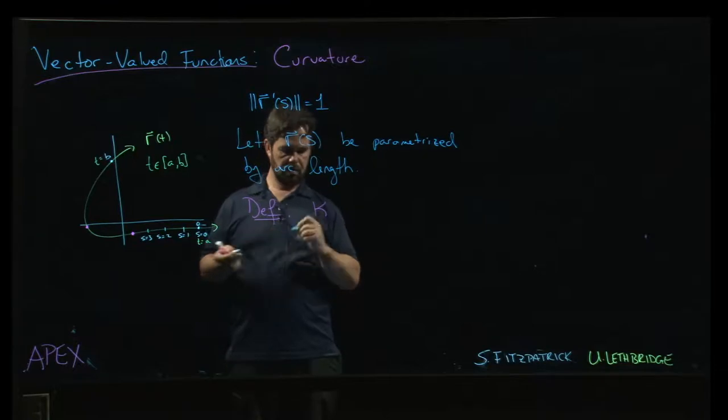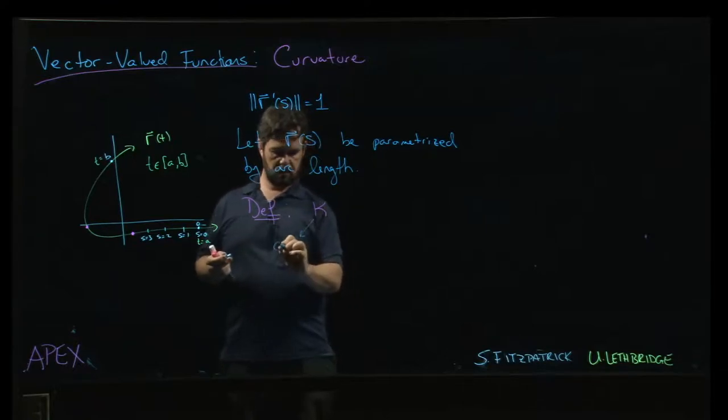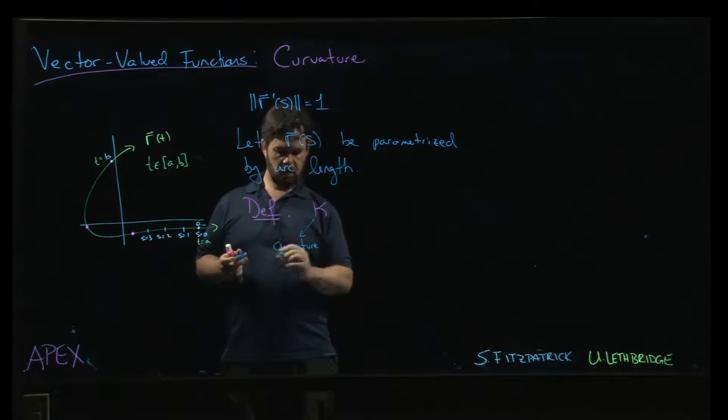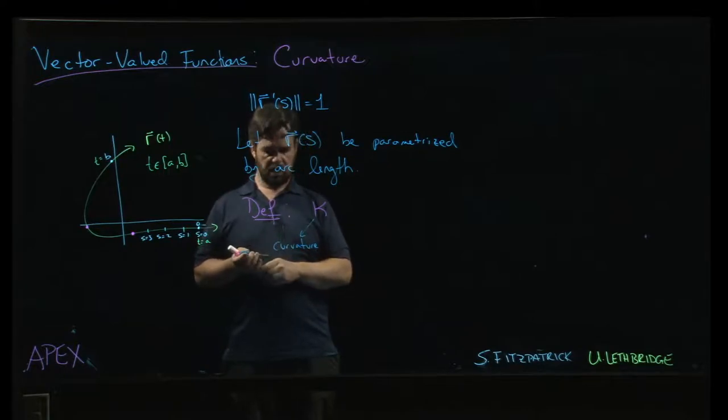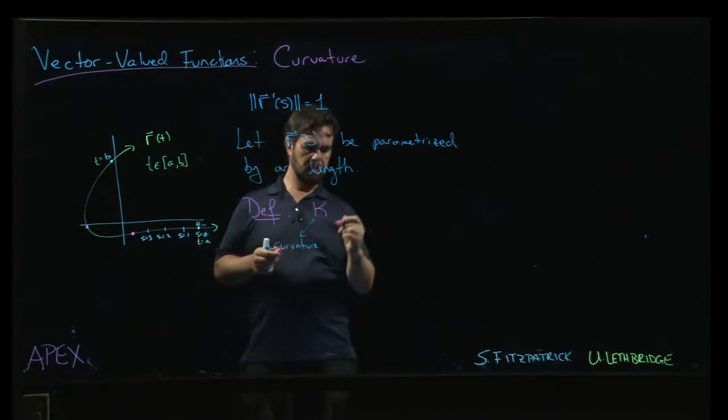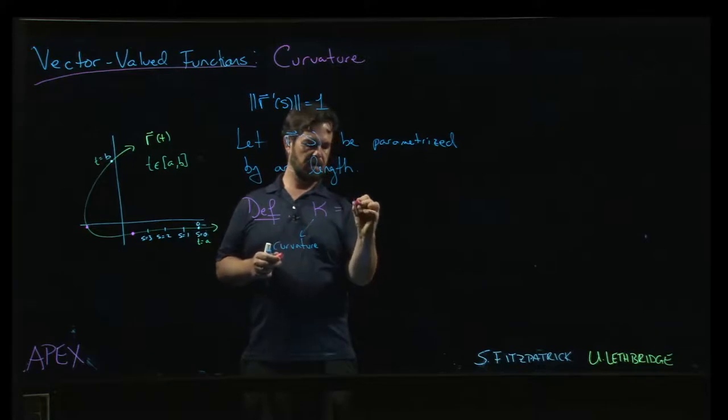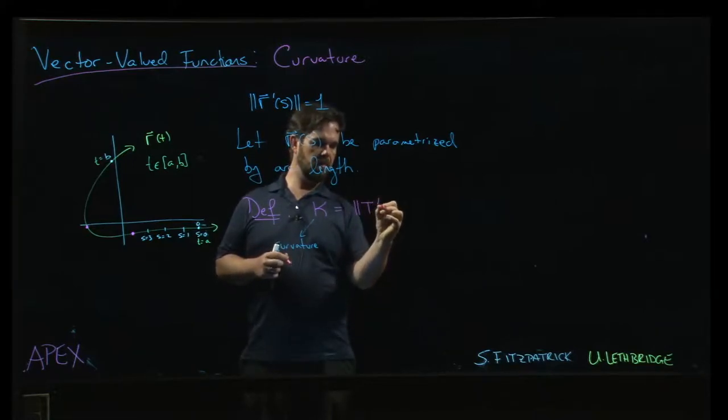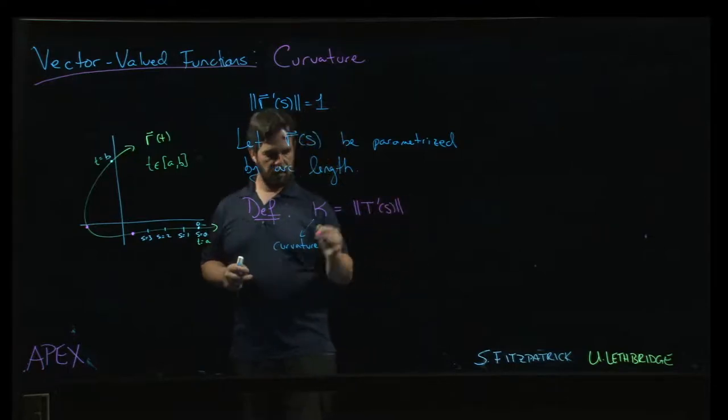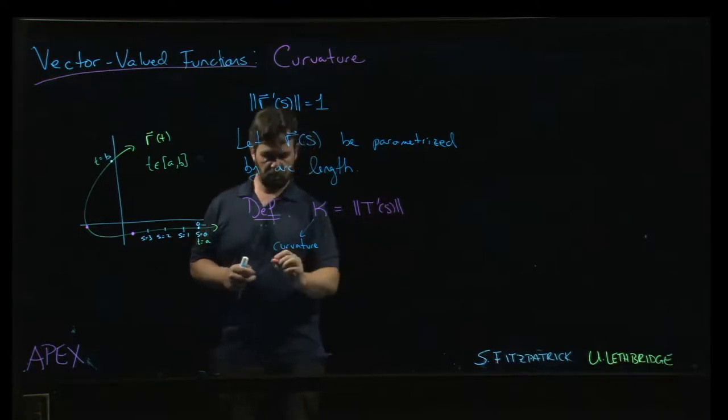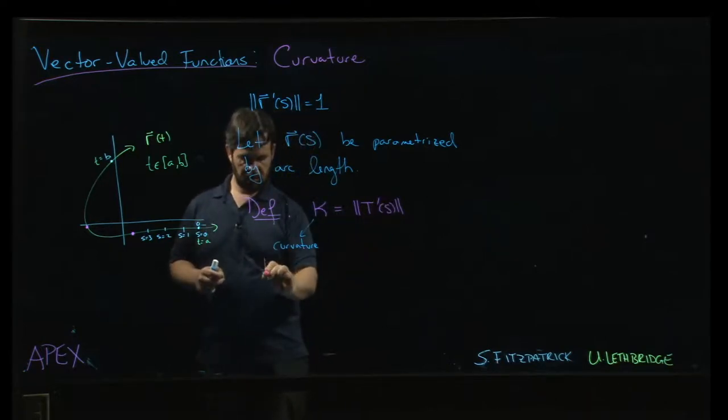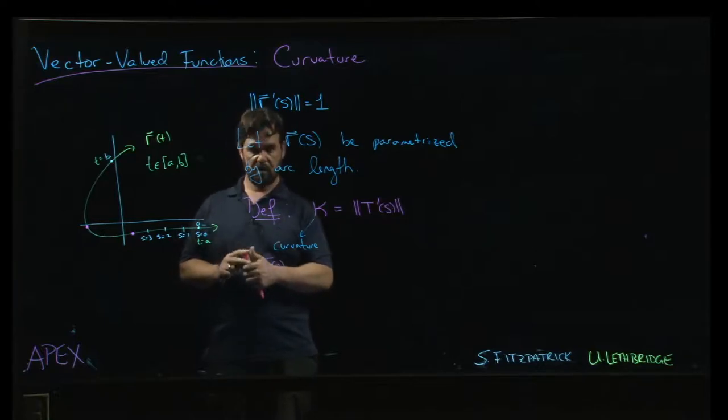Kappa is defined as the magnitude of T prime of s. T of s is our unit tangent vector.